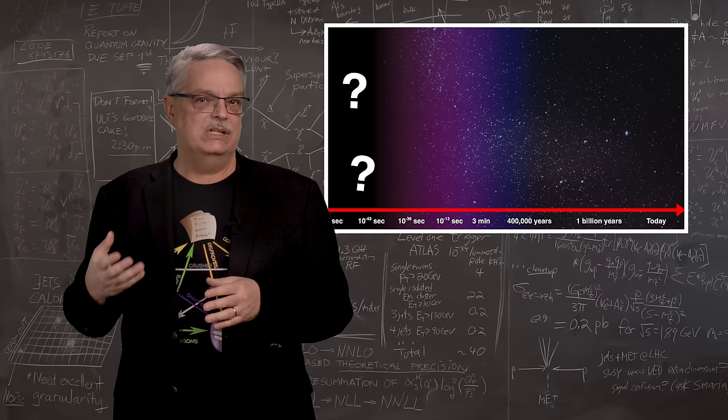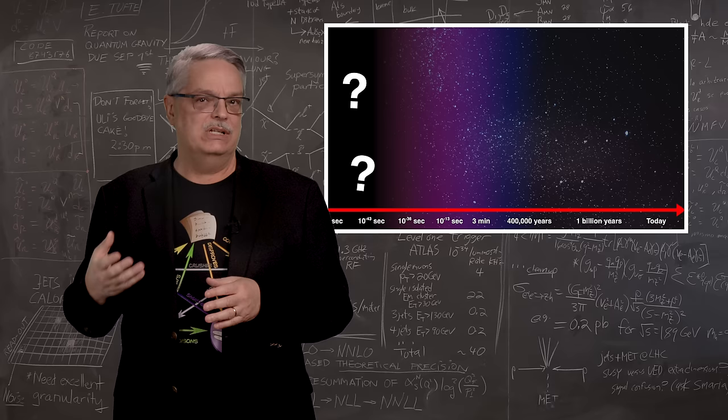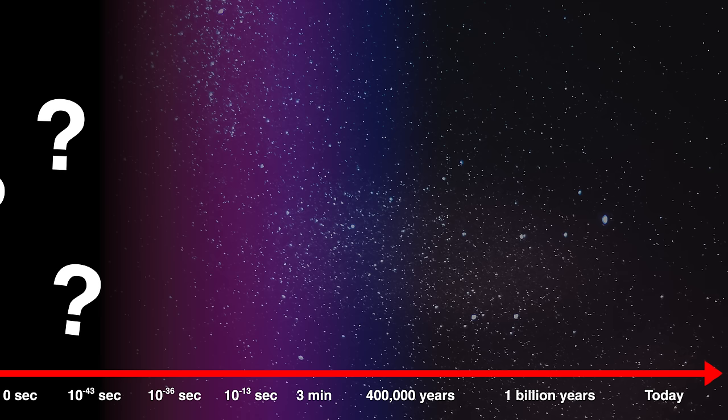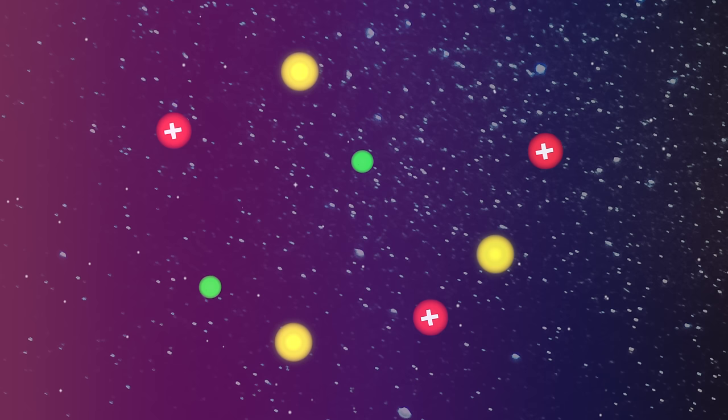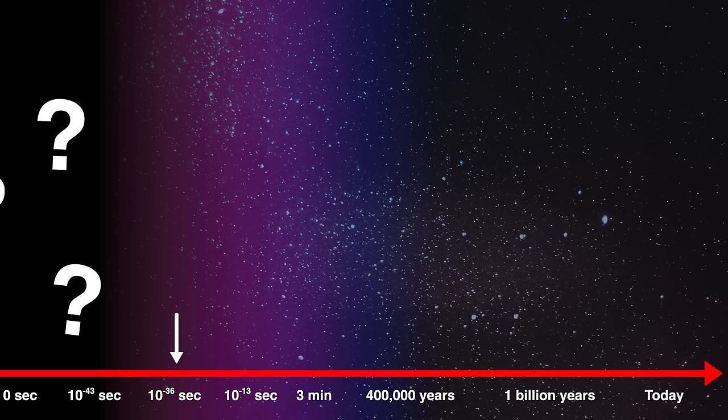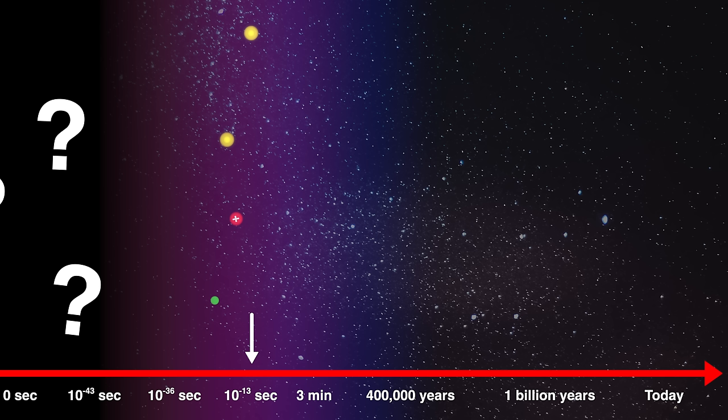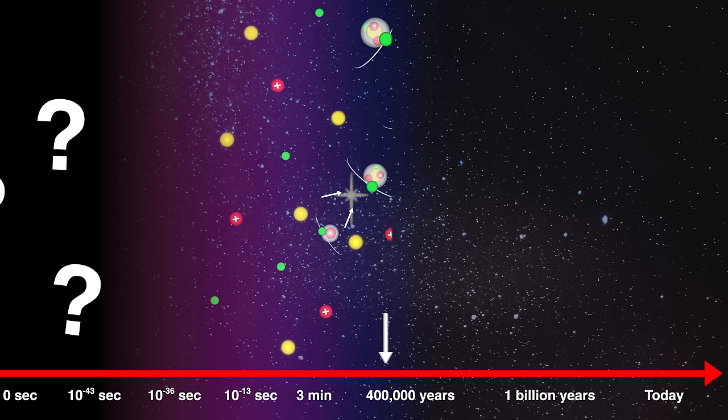From 10 to the minus 43 seconds to about 10 to the minus 36 seconds, the universe was expanding and cooling relatively slowly. At about 10 to the minus 36 seconds, the strong force became different from the others, which caused the visible universe to inflate from much smaller than an atom to something about the size of a grapefruit. The inflation period only lasted to about 10 to the minus 32 seconds. From that time to 10 to the minus 13 seconds, the universe continued to expand, but now it was coasting. After 10 to the minus 13 seconds, the expansion continued to coast, and that's the time where we finally have hard data.